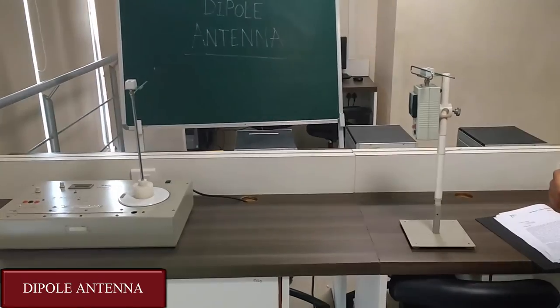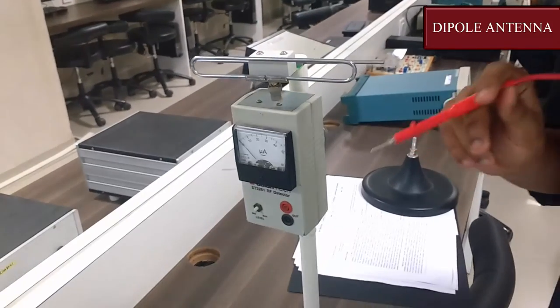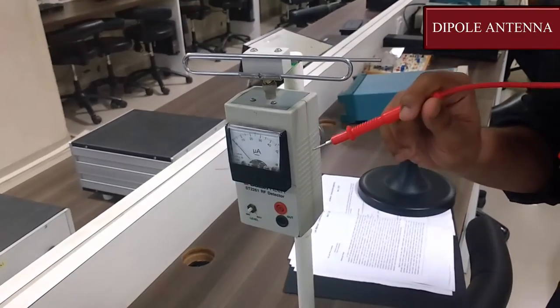This folded dipole antenna is used in order to increase the impedance. Here this is the reflector and the strength of the transmitting signal is observed through this millimeter.